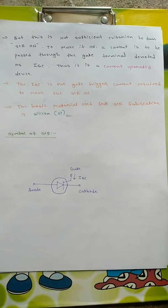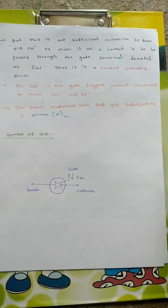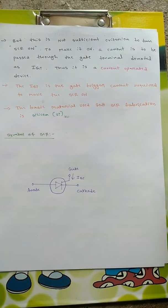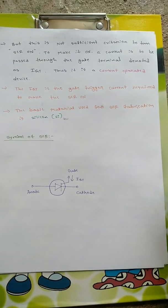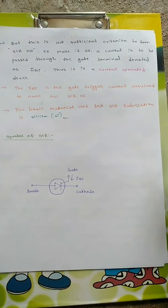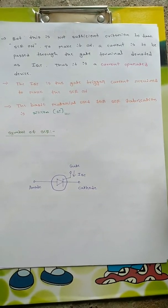Only that much is not sufficient. We need to pass some triggering current through the gate terminal in order to turn on the SCR. That's why it is called a current operated device, because the current flowing through the gate decides whether the SCR will turn on or off.